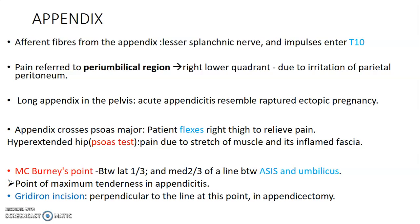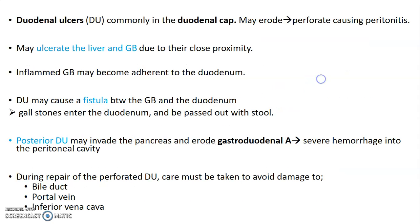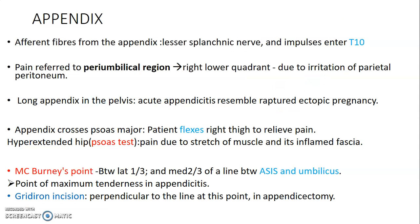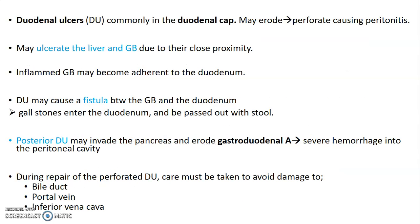McBurney's point is how to locate the appendix: draw a line from the anterior superior iliac spine to the umbilicus, and between the lateral third and the middle two-thirds of this line is McBurney's point. The gridiron incision is made perpendicular to this point.